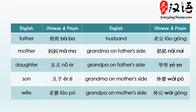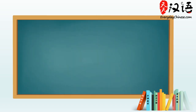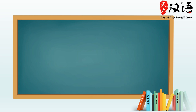What if you want to say 'my mother' or 'your father'? In Chinese, it's very easy to express possession, such as my, your, his, or her. You simply add the particle 的 after the personal pronoun.